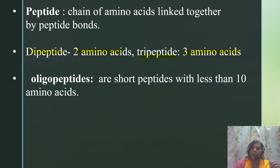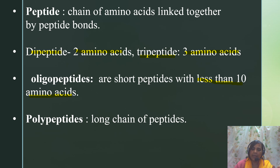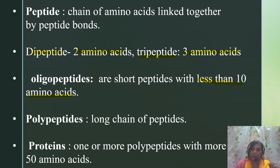An oligopeptide is a short peptide consisting of less than 10 amino acids. A polypeptide refers to a long chain of peptide molecules. A protein is a functional molecule consisting of a polypeptide with more than 50 amino acids — a polypeptide with more than 50 amino acids is known as a protein molecule when that polypeptide is a functional moiety.